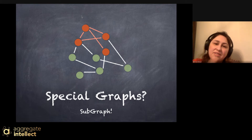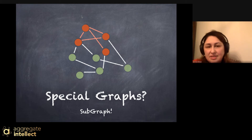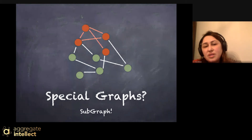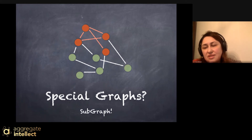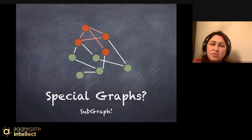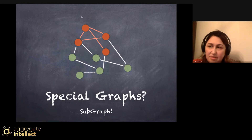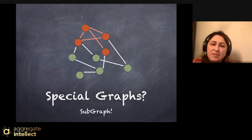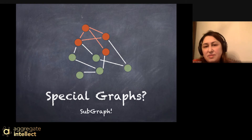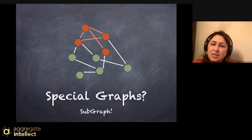Ego networks are really useful in social analysis and network analysis areas. Graph queries are also an application of subgraphs, where you define a type of subgraph and use it for finding similar behavior or similar connections throughout the graph.